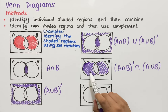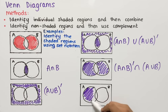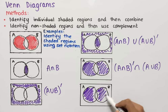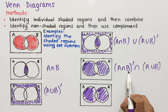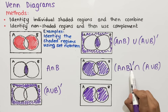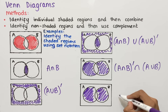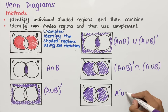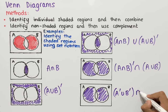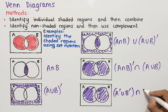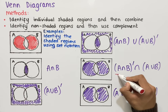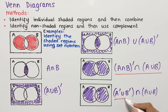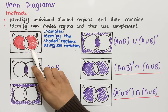Equally, applying complement inside the first bracket, the intersection symbol becomes union and we get A complement union B complement, all intersected with A union B. So this is one valid answer, and (A intersect B) complement intersect (A union B) is a second valid answer — both are completely fine for this shaded region.